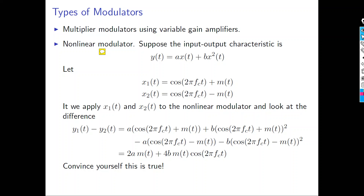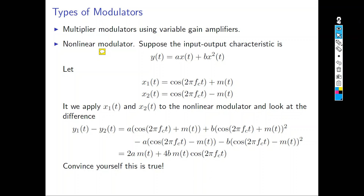If you assume x₁(t) = cos(2πfc·t) + m(t) and x₂(t) = cos(2πfc·t) − m(t), then apply x₁(t) to the nonlinear equation to get y₁(t), and apply x₂(t) to get y₂(t), then subtract them from each other.